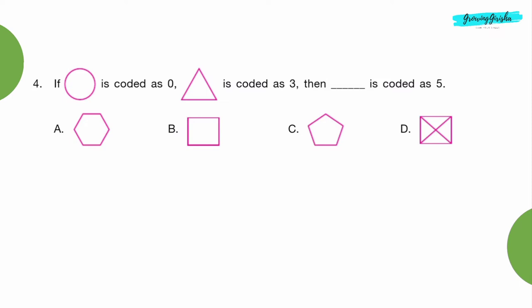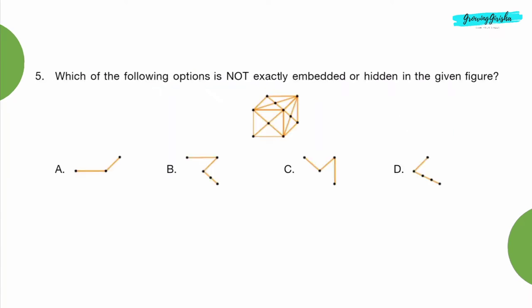Question 4: If circle is coded as 0, triangle is coded as 3, then dash is coded as 5. Option C: Pentagon. Question 5: Which of the following options is not exactly embedded or hidden in the given figure? Option D.